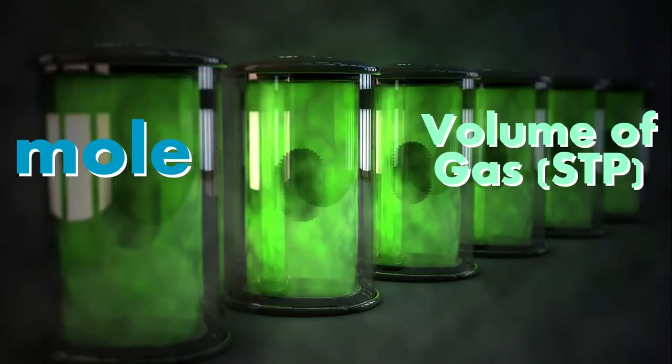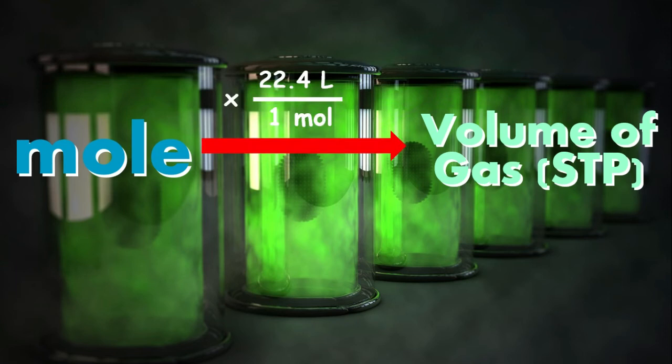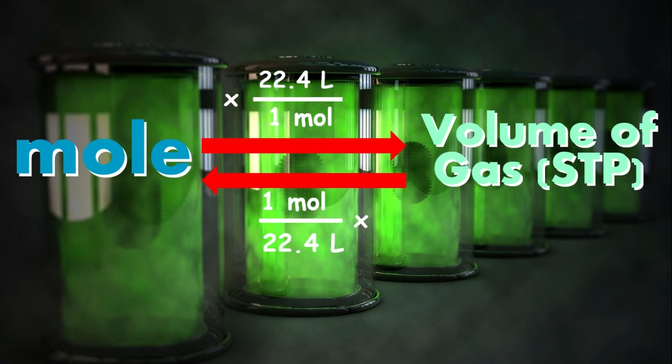To summarize: when you are given the number of moles and you want to get the volume of gas at STP, you have to multiply the number of moles by 22.4 liters over 1 mole, or simply multiply the moles by 22.4 liters. On the other hand, if you are given the volume of gas and you want to get the number of moles, you have to multiply the volume by 1 mole over 22.4 liters, or just divide the given volume by 22.4 liters. This will cancel the units of liters.